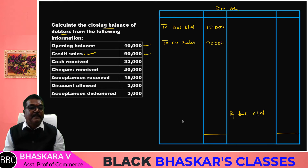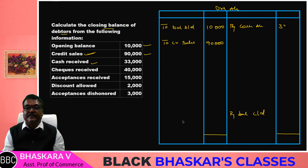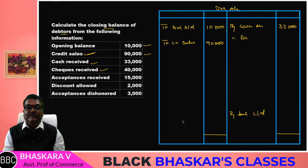Cash received — By Cash account. Cheque received — By Bank account. Cheque received: 40,000. Cash received: 33,000.